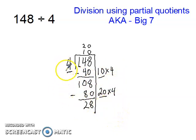Now I have 28, and 4 times something might get close to 28. I might use 5 times 4 because I know that's 20. 5 times my 4 is 20, and then I'll put my 5 up here.